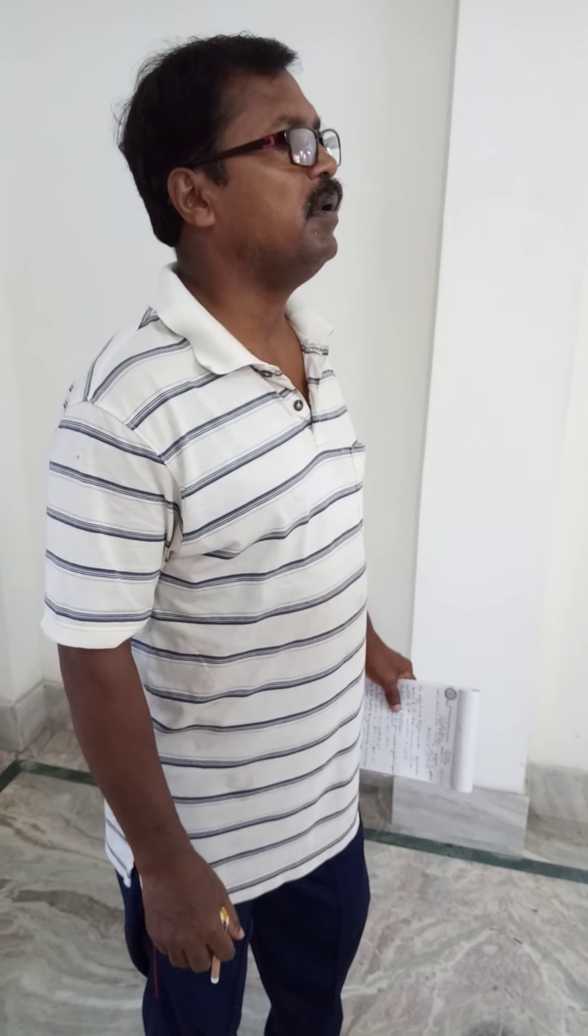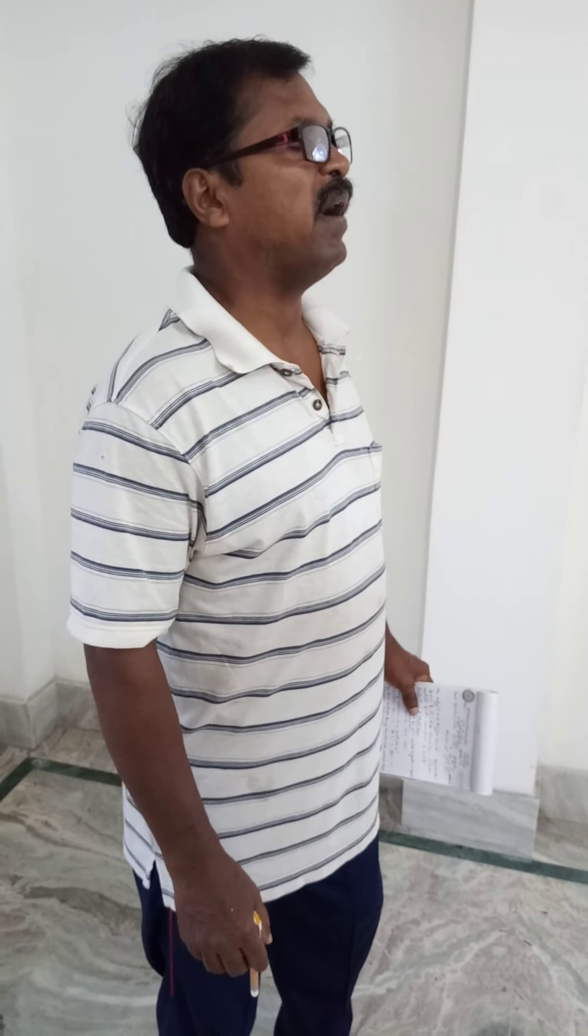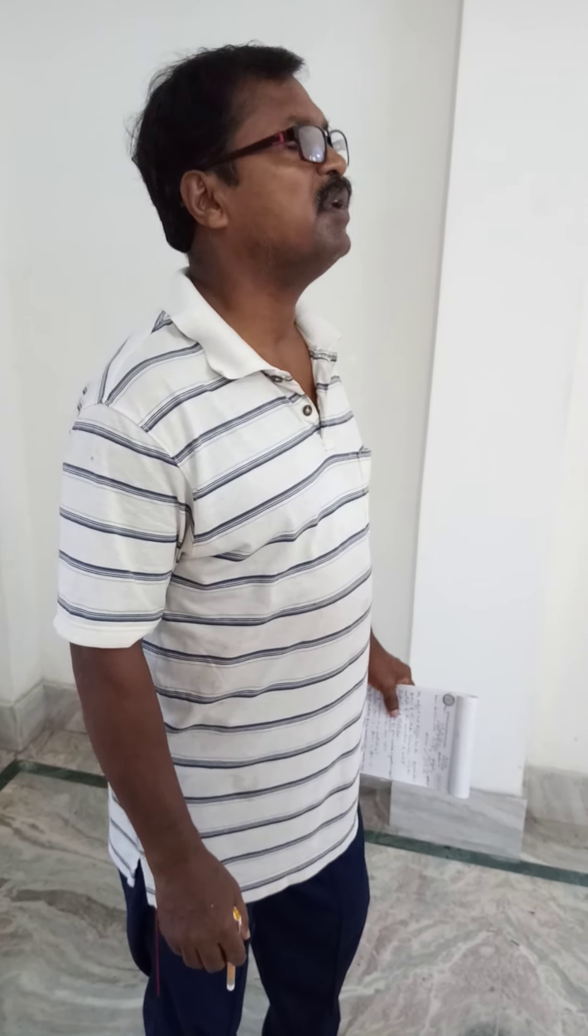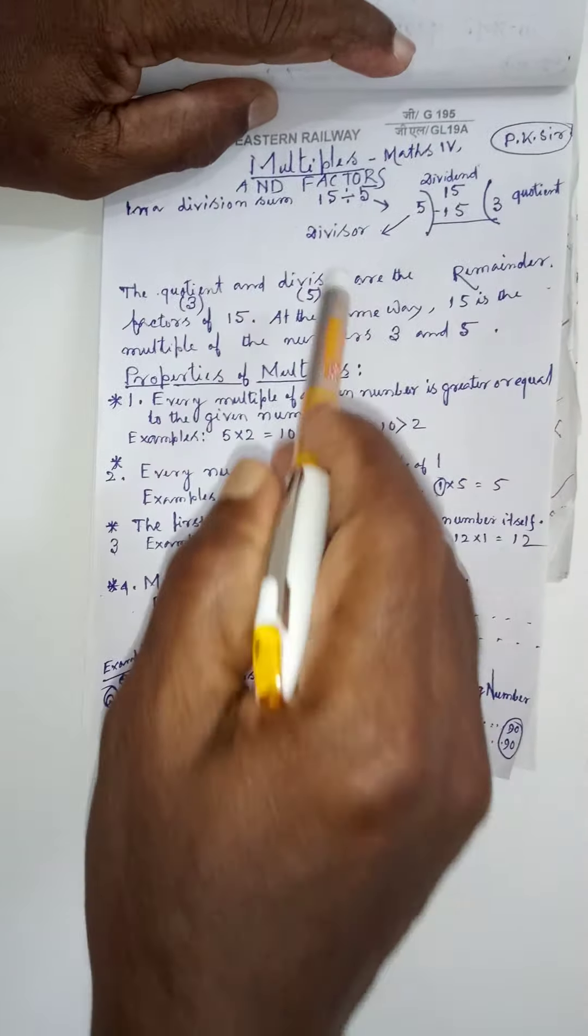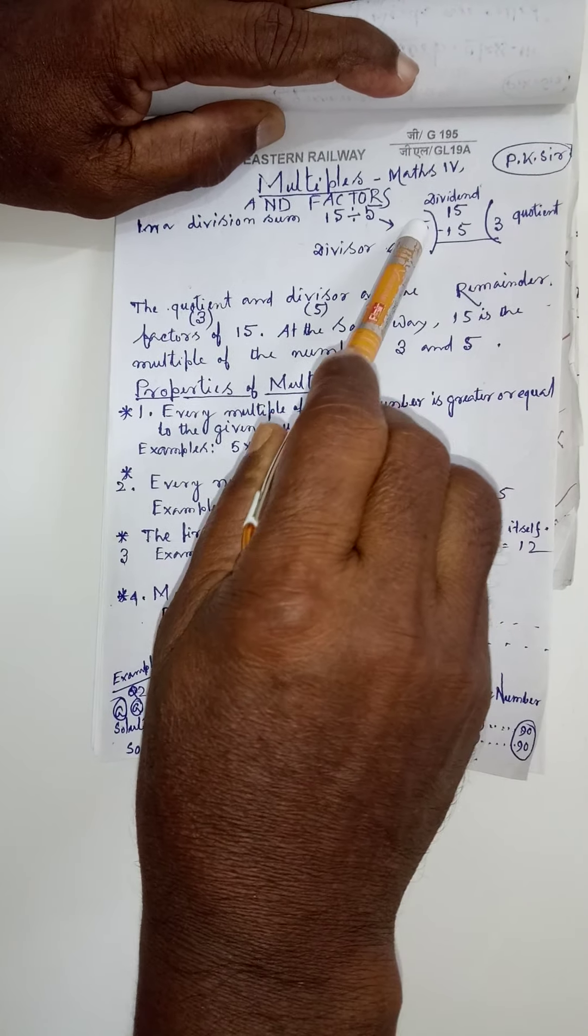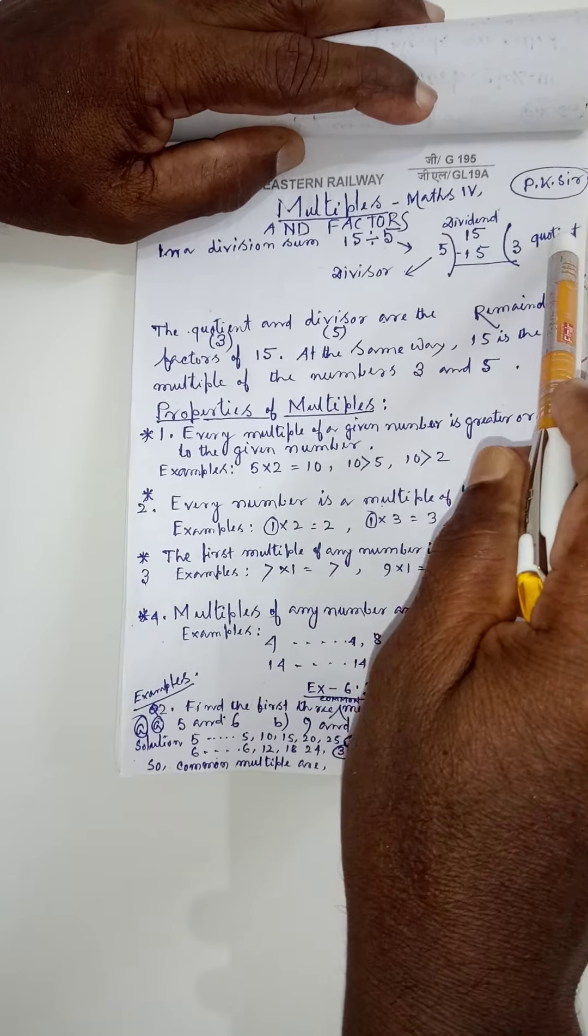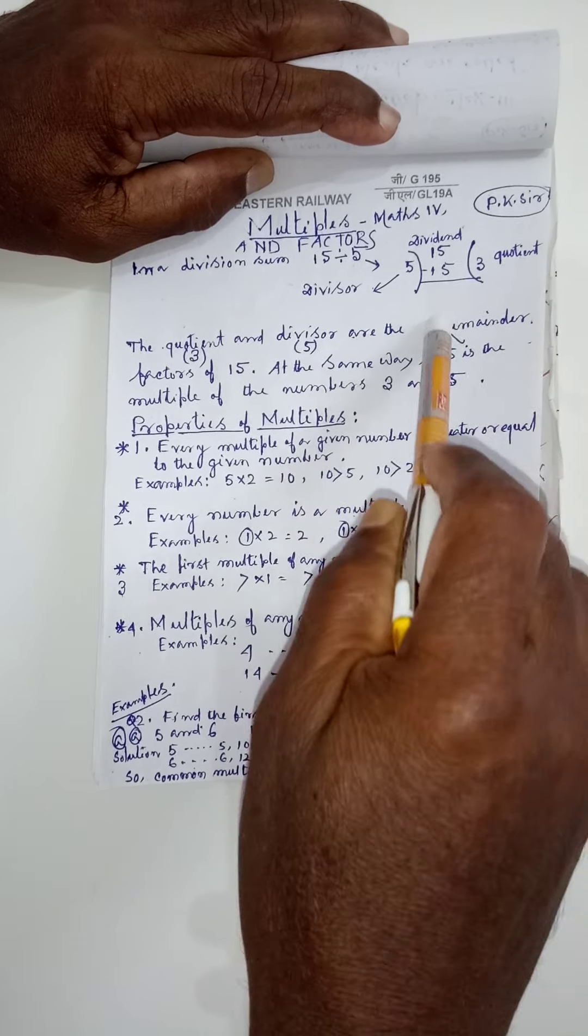It is multiples and factors. What is multiple and what is factors? Let us see. In a division sum, we might have seen that there are different terms. One, there will be a divisor and dividend. This part is quotient and remainder.